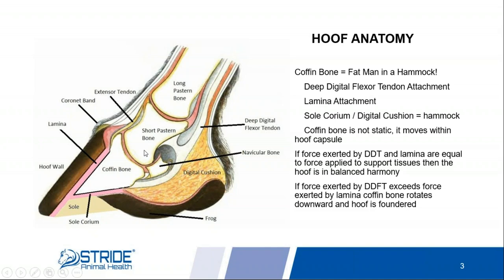If you look at it that way, you begin to understand some of the forces and the mechanics that come into play with the coffin bone and how that affects hoof health in general. When we say it's a fat man in a hammock, what exactly are we referring to? The deep digital flexor tendon, which comes down the back of the leg, actually ties in to the back of that coffin bone.